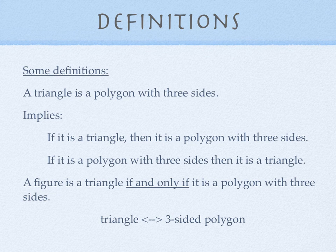Here's some definitions. A triangle is a polygon with three sides. This definition implies two other conditional statements. If it is a triangle, then it is a polygon with three sides.